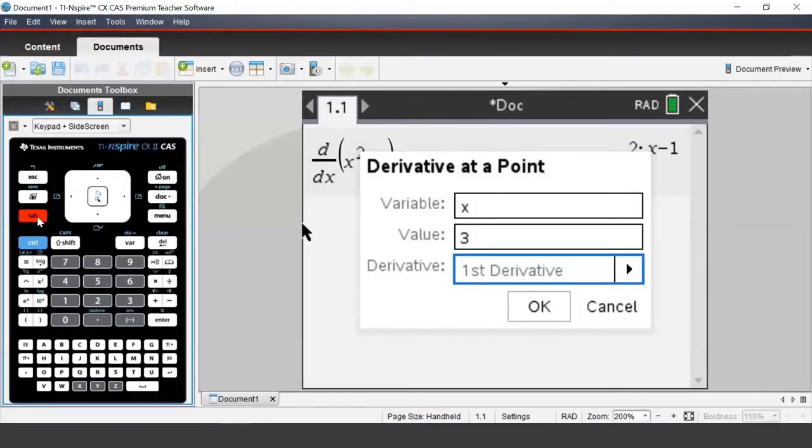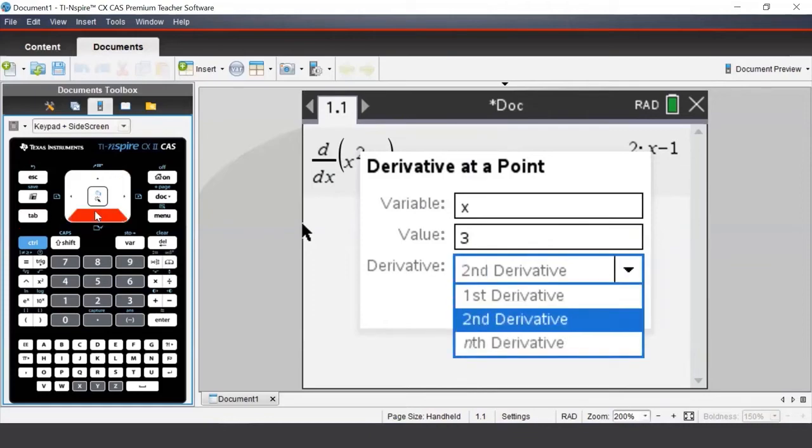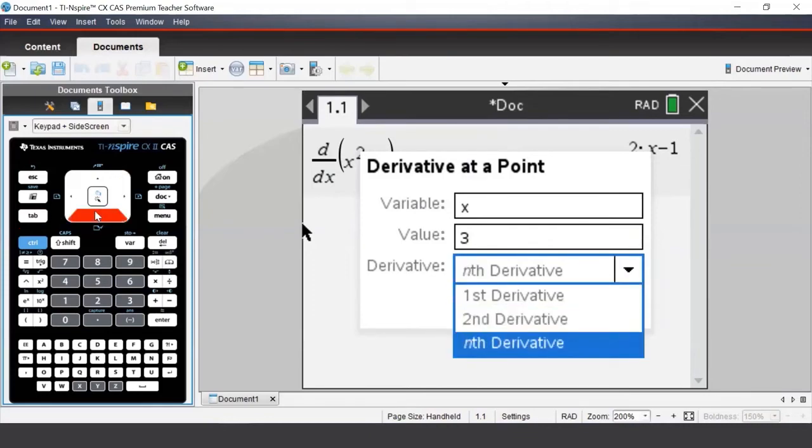The last field is which derivative we would like to evaluate. We have the option of the first, the second, or the nth derivative. We'll look at the first derivative.